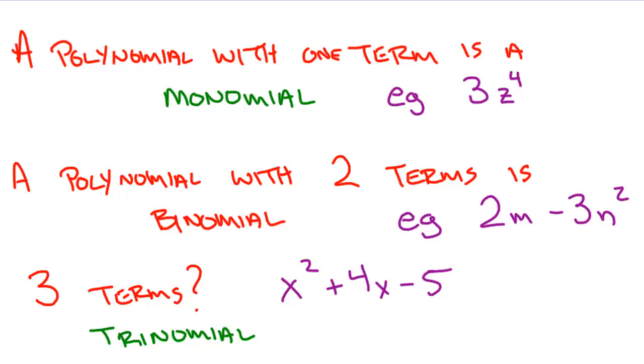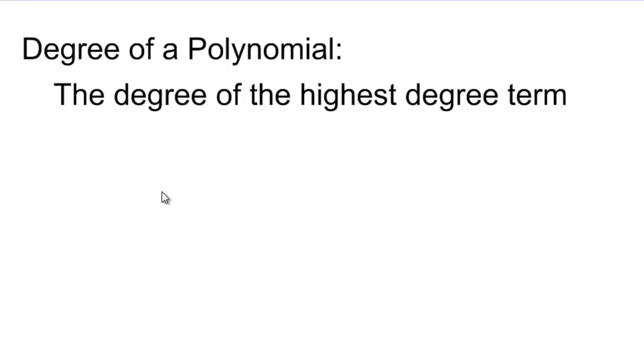And, just like terms can have degrees, polynomials can also have degrees. Polynomials can have degrees, and we find that by looking at the term with the highest overall degree, and we say that that is the degree of the polynomial.